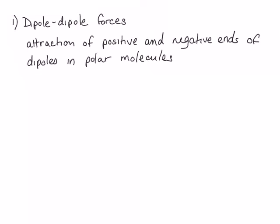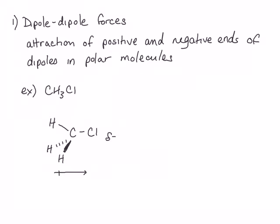Let's look at an example. Chloromethane is a polar molecule. Its molecular dipole points in the direction of the chlorine and is fairly large. The molecule has a partial negative on the chlorine end and a partial positive on the hydrogen end. If we have more than one chloromethane molecule, they can orient themselves so that their molecular dipoles line up — the negative end of one dipole attracts the positive end of another.